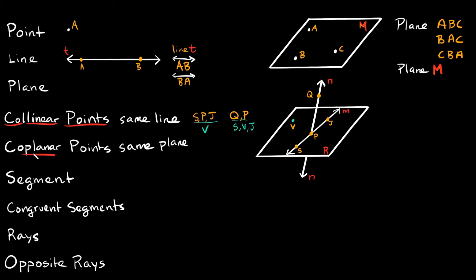Now let's talk about coplanar points — they're points on the same plane. So what four points are on the same plane? It would be S, P, J, and V — they are all on this plane. What points are not coplanar with these points? It would be point Q, way up here — it's not on this piece of paper. So Q would not be coplanar with the rest of these points.